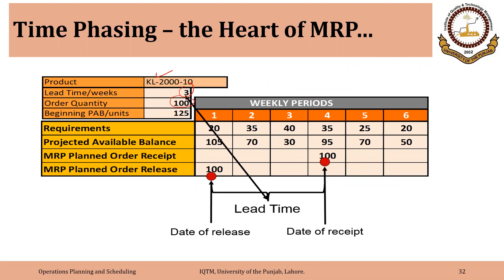We have a certain product that has a lead time of three weeks. The lot size is 100, the order quantity is 100, and the on-hand balance is 125. In period one, we have a requirement of 20 and we already have 125 in balance, so after meeting the requirement of 20, we will be left with 105 items at the end of week one. In week two, we have a requirement of 35 and from the previous period we have 105 available, so at the end of week two we will be left with 70 items. In week three, there is a requirement of 40 and we have 70 from week two, so after meeting the requirement we will be left with 30 items.